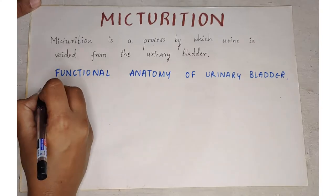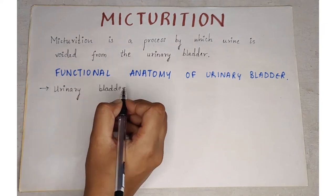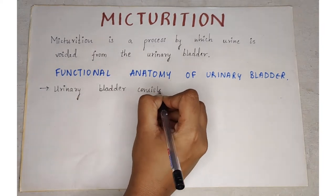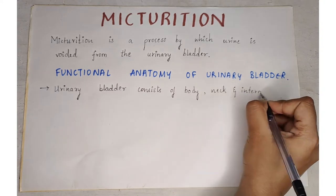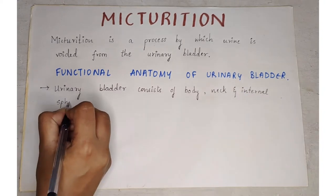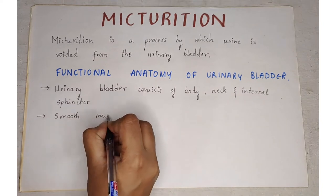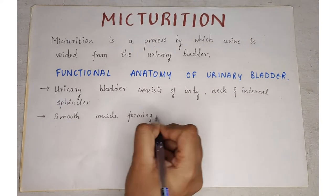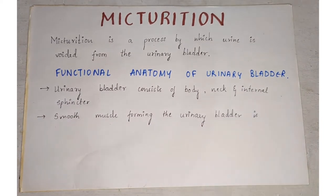Thus, the urinary bladder consists of a body, a neck, and an internal urethral sphincter. The smooth muscle forming the urinary bladder is the detrusor muscle.